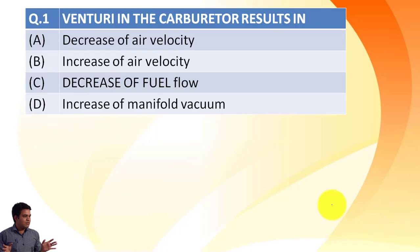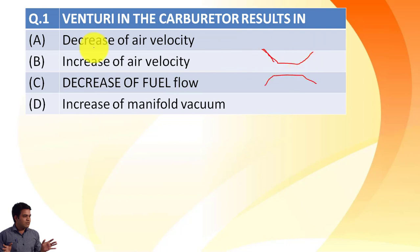The first question is: the venturi in the carburetor results in — we have four options: decrease of air velocity, increase of air velocity, decrease of fuel flow, and increase of manifold vacuum. If you have visited my previous video about the construction detail of the simple carburetor, you are very well aware with the venturi construction. The venturi shape in the carburetor looks like a nozzle.